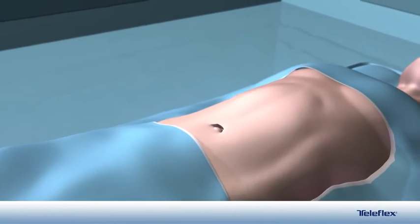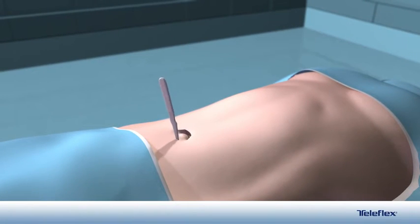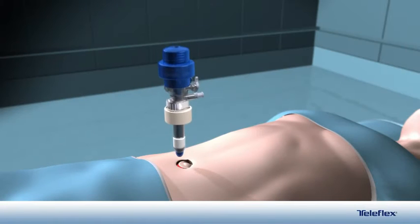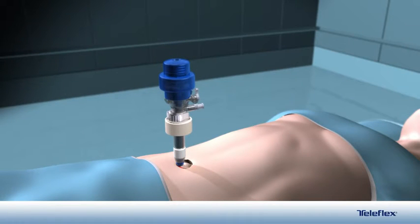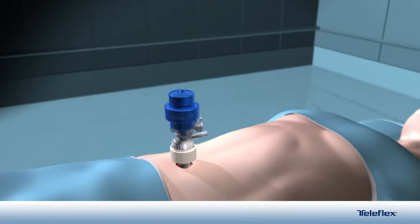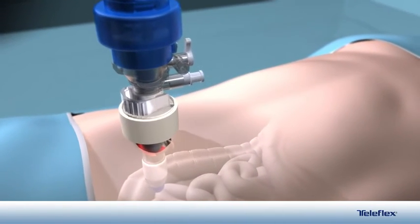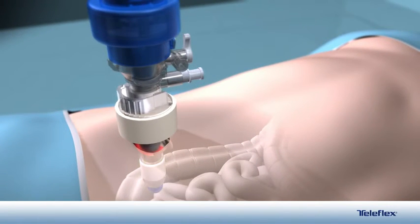The patient has been prepped and the surgeon is now ready to insert the balloon open access port. A 10 mm balloon open access port is inserted in the umbilicus using the Hassan technique. Note the balloon portion of the port is inside the peritoneum.